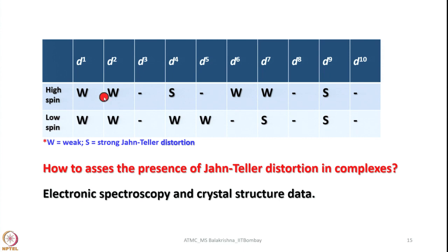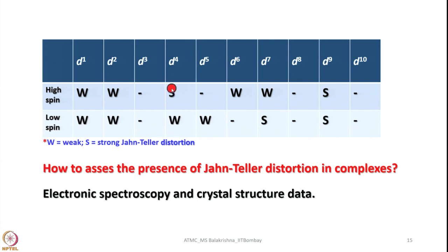I have listed all electronic configurations d1 to d10 to assess what electronic configuration really shows Jahn-Teller distortion in complexes, in both high spin and low spin cases. When we have one electron in the d orbital irrespective of high spin or low spin they show weak Jahn-Teller distortion. For d4 where eg has one electron, and also for d9 where we have three electrons, we come across very strong Jahn-Teller distortion — as seen in chromium 2+ and copper 2+ octahedral complexes. In case of d5, d3, d8, and d10 we do not see it at all, and for d6 and d7 we come across weak Jahn-Teller effects.